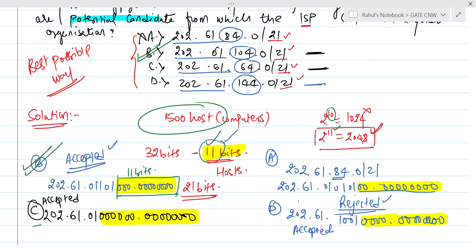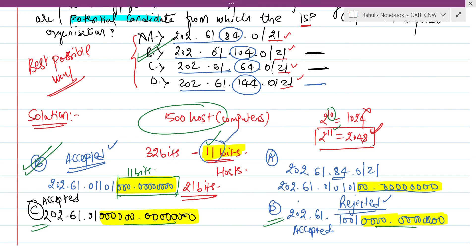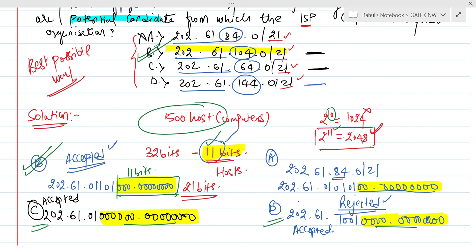Option C is also a possible answer since it also provides sufficient host bits. However, the best possible answer with minimum wastage is Option B. This question was asked in GATE 2020 for two marks.